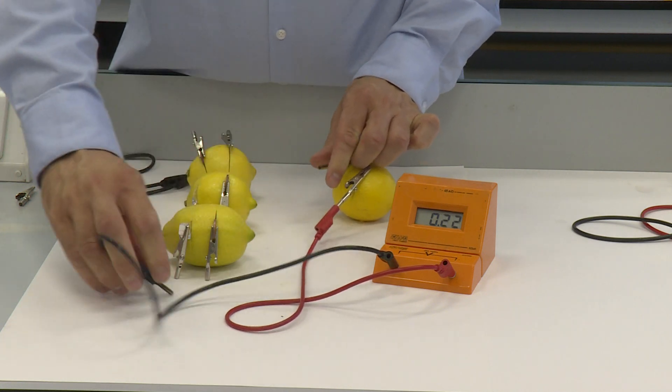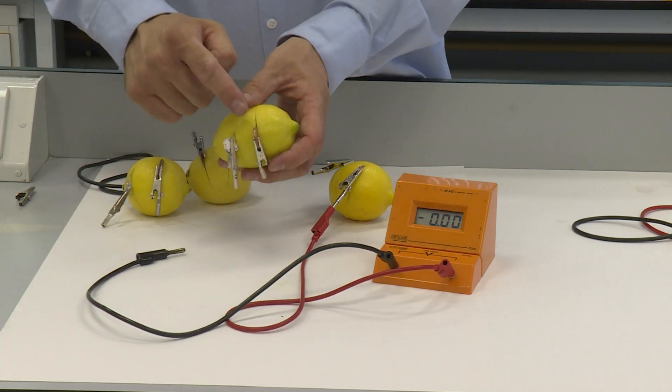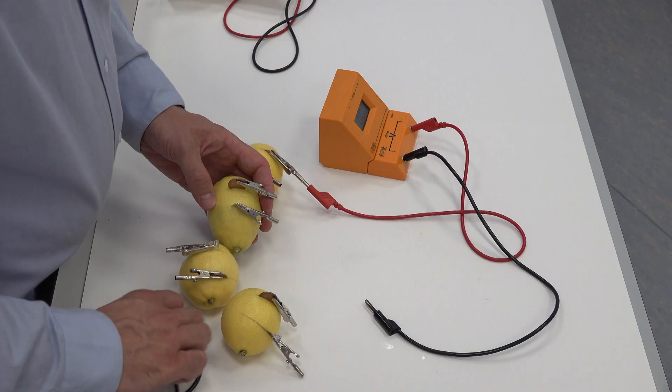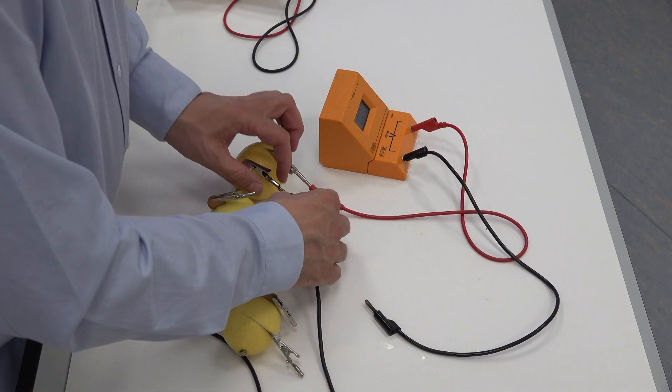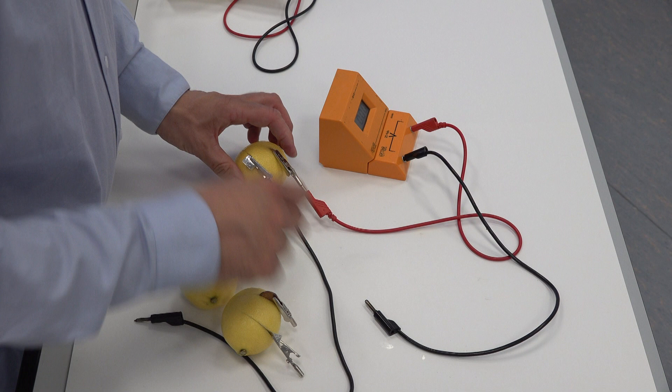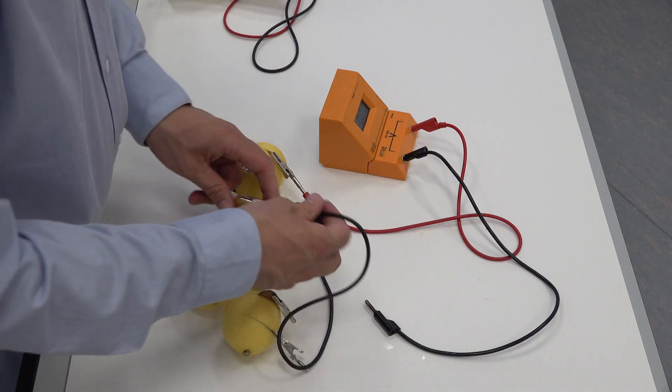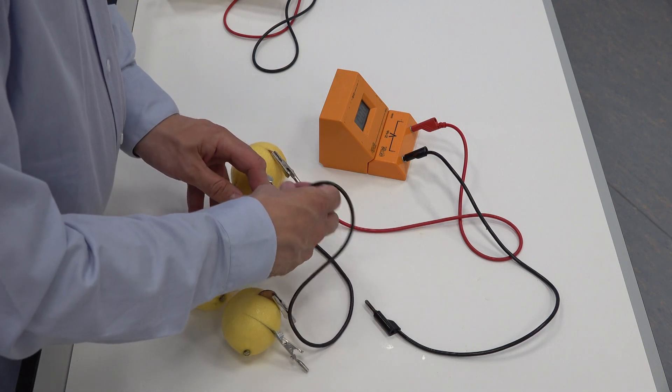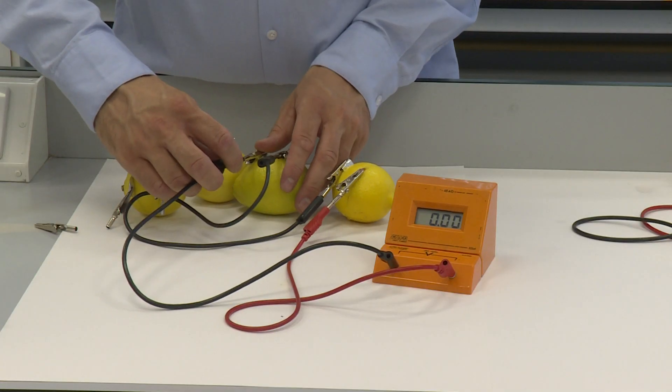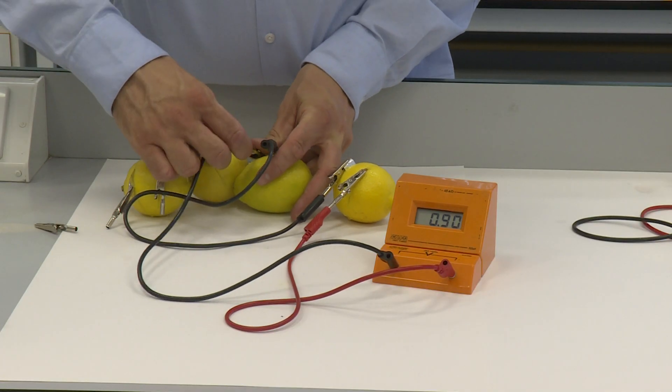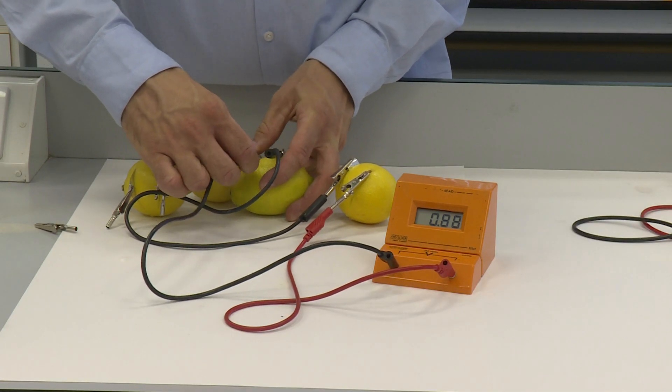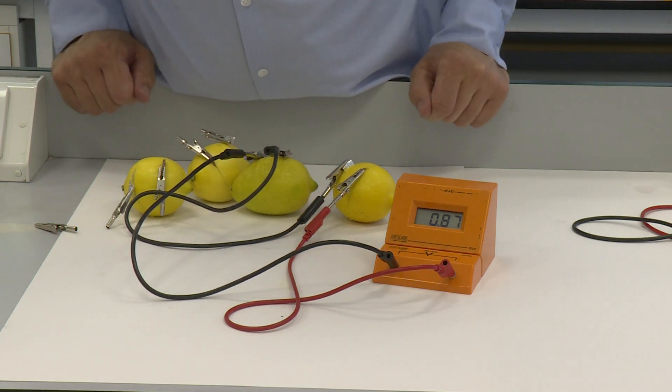So what I'm going to do is I'm going to take one more lemon which has been prepared with copper and aluminum, and I'm going to add in another wire which goes from the aluminum to the copper of the next lemon. I'm then going to attach in the voltmeter again to the aluminum, and we can see we get a slightly higher reading of 0.85.